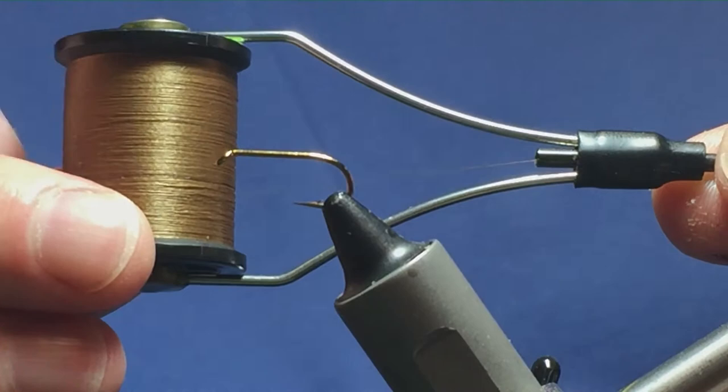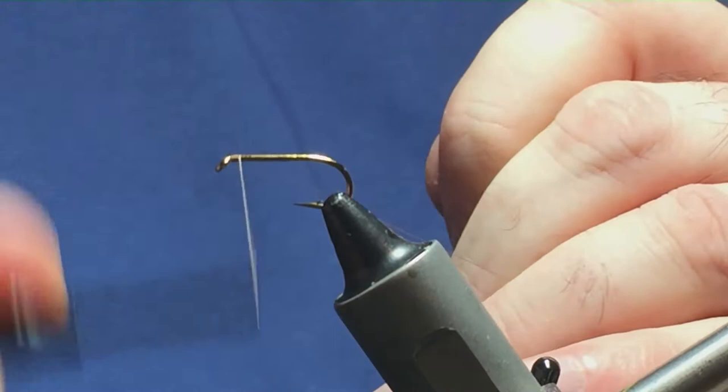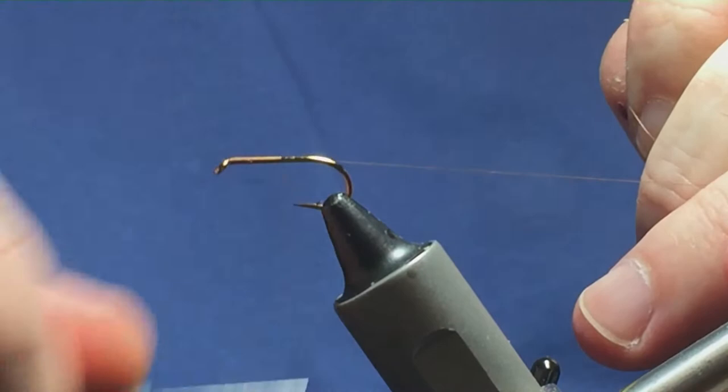So I'm just going to come in and get the thread started behind the eye of the hook. I'm just going to run on a bit of thread. I'm just going to take my thread down, just slightly past the point of the hook and remove the waste tag.